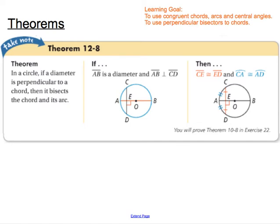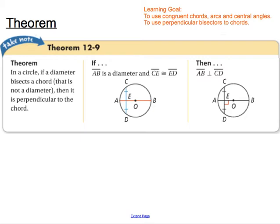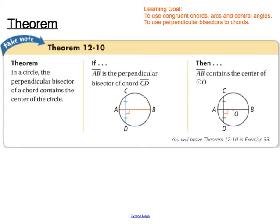Here we have three more related theorems: 12-8, 12-9, and 12-10. Theorem 12-8 states that in a circle, if a diameter is perpendicular to a chord, then it bisects the chord and its arc — giving us two equal parts CE and ED, and two equal arcs CA and AD. Theorem 12-9 tells us that if a diameter bisects a chord, as long as that second chord is not a diameter itself, then it is perpendicular to the chord. Theorem 12-10 says that in a circle, the perpendicular bisector of a chord must go through the center of the circle.